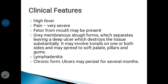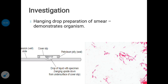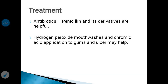The acute stage subsides in about a week, but ulcers may persist for several months. The diagnostic technique for Vincent's angina is a hanging drop preparation of a smear, which demonstrates the presence of the organism under the microscope. Treatment involves antibiotics — penicillin and its derivatives are helpful. Apart from that, hydrogen peroxide mouthwash and chromic acid application to the gums and ulcer are also helpful.